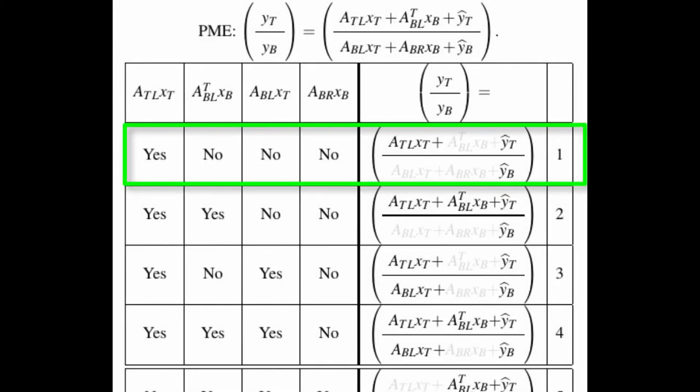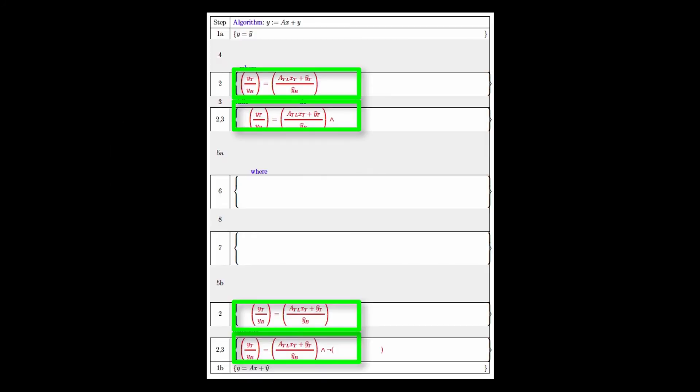What we'll do in the next video is pick loop invariant 1, which you then fill into the worksheet. And then with that, we will derive the other parts of the algorithm.